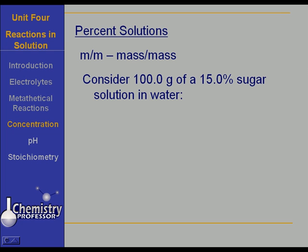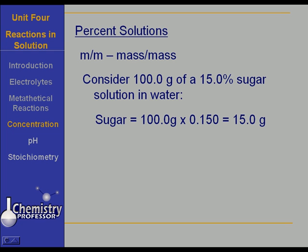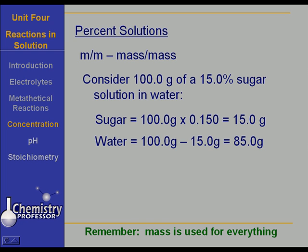What we are talking about here is everything being in mass or weight. For example, suppose you have a hundred grams of a fifteen percent sugar solution in water. You take fifteen percent of a hundred grams — that gives you fifteen grams of sugar — and you add eighty-five grams of water. When you add the masses, it comes out to be a hundred grams. Mass is used for everything.